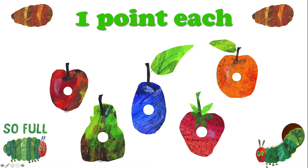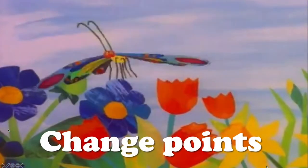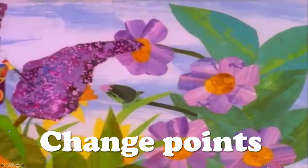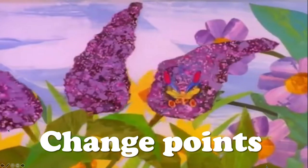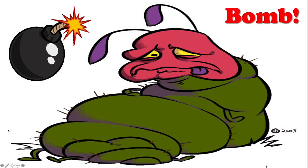Each different fruit is worth one point. This is the change point slide — there's a short video file in here, so teams can change points with another team if they want to. And this one here is where the caterpillar eats a bit too much food, becomes sick and gets a really bad stomach ache. I've made this one into the bomb, so if they get the bomb that team can lose all of their points.